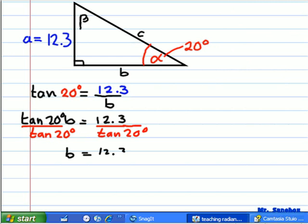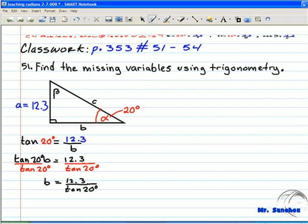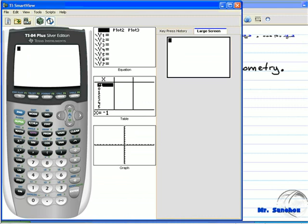We're going to find the approximate answer by using a scientific calculator. Using a TI-84 calculator, we're going to punch it in straightforward: 12.3 divided by tangent of 20 degrees. Please make sure that the calculator is already in degree mode. If so, then you should get the answer shown.